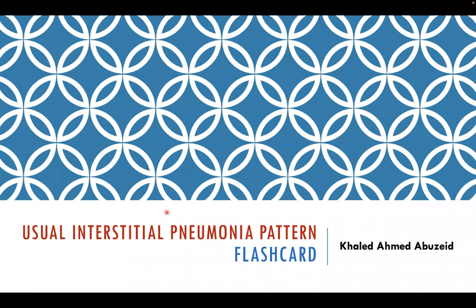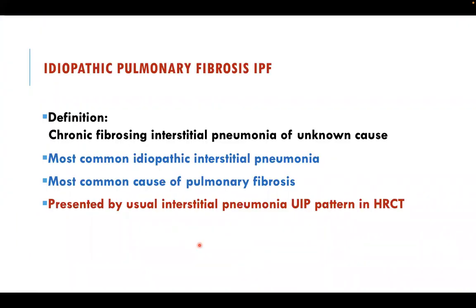The flashcard topic is the usual interstitial pneumonia pattern. Idiopathic pulmonary fibrosis is a chronic fibrosing interstitial pneumonia of unknown cause, considered the most common idiopathic interstitial pneumonia and the most common cause of pulmonary fibrosis. Idiopathic pulmonary fibrosis is presented by the usual interstitial pneumonia pattern on HRCT.